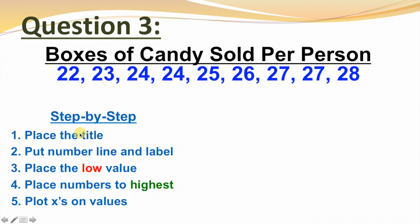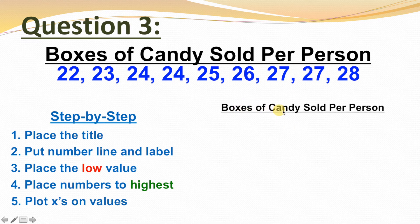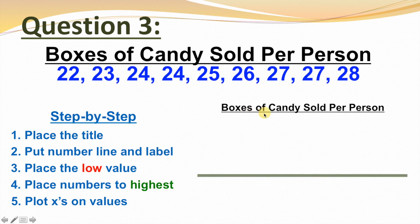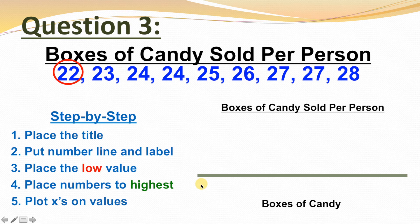Step 1, place the title — boxes of candy sold per person. Step 2, put number line and label. We'll put our number line across the bottom and label it as boxes of candy. Step 3, place the low value — the lowest value we have here is 22, so we'll put that at this end of the number line. Step 4, place numbers to the highest — our highest number is 28, so we're going to write from 22 all the way to 28 across our number line.